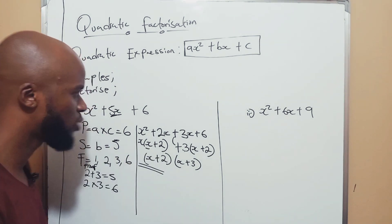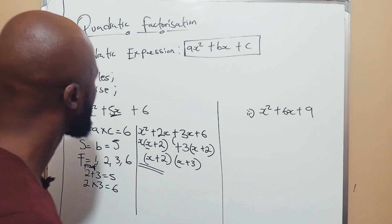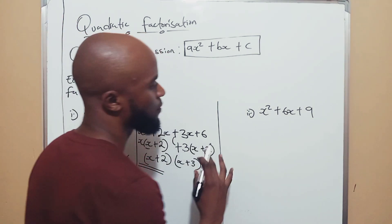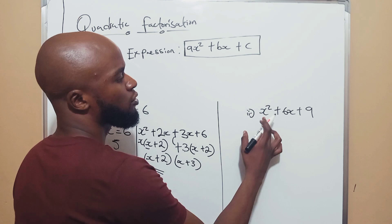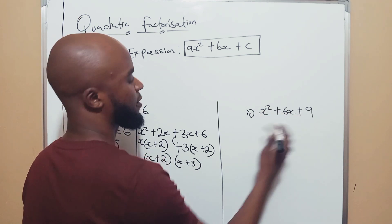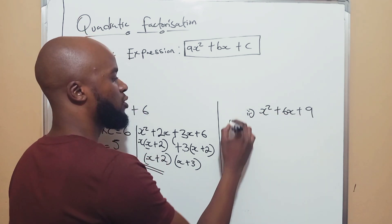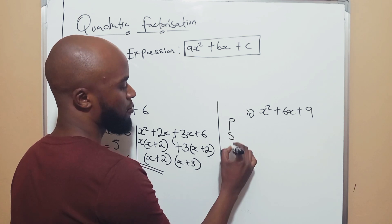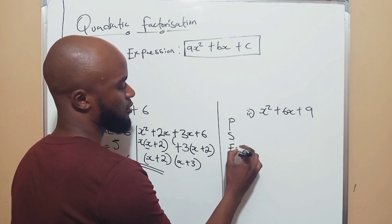Let's move on to example 2. We have five examples. Factorize x squared plus 6x plus 9. Find your product, your sum, your factors.